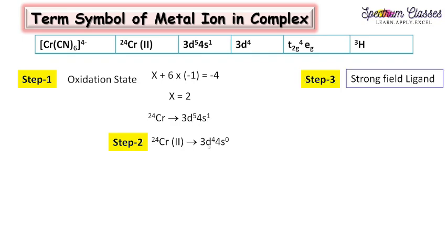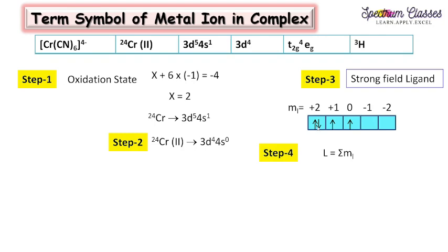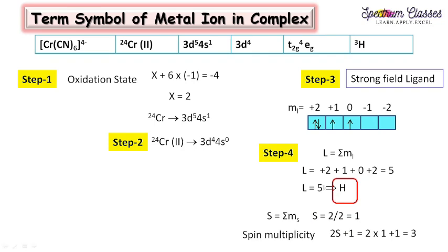The third step: CN is a strong field ligand, so electrons are paired first. With four electrons, we fill the three t2g orbitals (1, 2, 3) and the fourth electron pairs up. Calculating the total orbital angular momentum: +2, +1, 0, then +2 gives a sum of 5, corresponding to the H term. There are two unpaired electrons, so the term symbol is ³H. The spin multiplicity 2S+1 = 3.